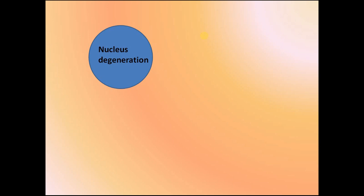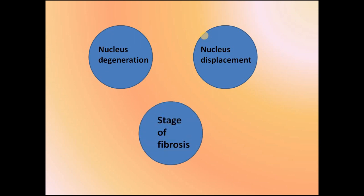Let's revise quickly. There are mainly three changes occurring in disc bulging: nucleus degeneration, nucleus displacement, and the stage of fibrosis. In nucleus degeneration, disintegration and fragmentation occur in the nucleus pulposus and disintegration of the posterior part of the annulus fibrosus occurs. In nucleus displacement, there are three processes: protrusion, extrusion, and sequestration — remember the home example. In the stage of fibrosis, the residual nucleus undergoes fibrosis, and the extruded nucleus undergoes calcification and spur formation.